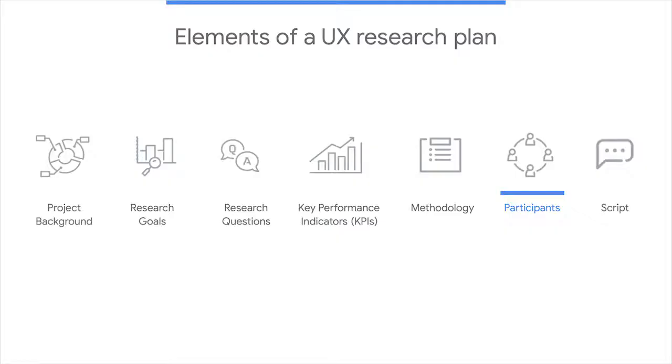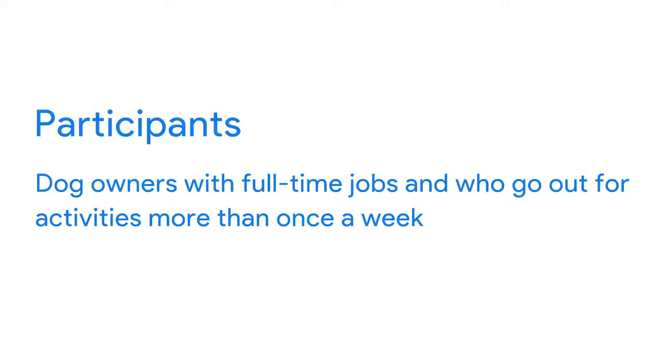Your research plan also lists the research participants. Who will you survey? What characteristics do the participants have? For example, you might want to recruit participants who are dog owners with full-time jobs and who go out for activities more than once a week. The types of participants you select should be based on your research goals, and you should make sure the participants you select do not bias your results. Let me tell you a true story to illustrate what I mean.